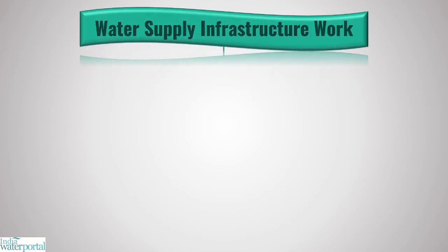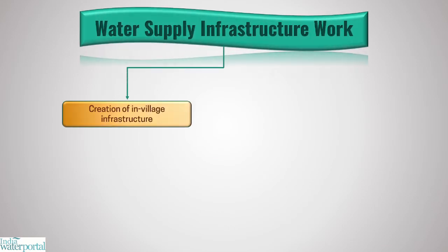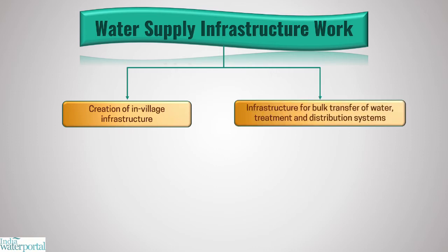Broadly, water supply infrastructure work will fall in two categories. First, creation of in-village infrastructure including source development, strengthening, augmentation, and grey water management. Second, infrastructure for bulk transfer of water, treatment, and distribution systems.